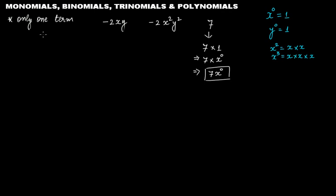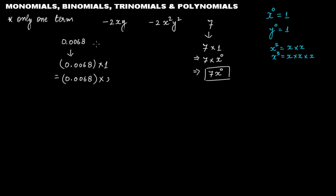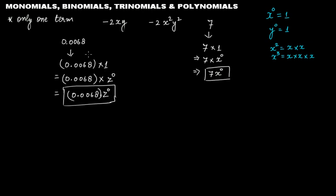What about 0.0068? Is this a monomial? Yes, even this can be written as 0.0068 times 1, and replacing 1 with z raised to the power 0, this becomes 0.0068 times z raised to the power 0. It contains a variable, therefore this is an algebraic expression and it is a monomial because it has only one term.